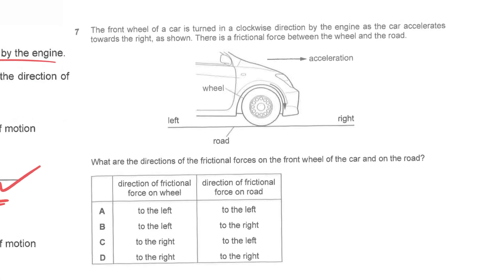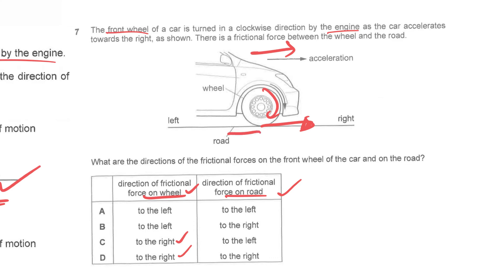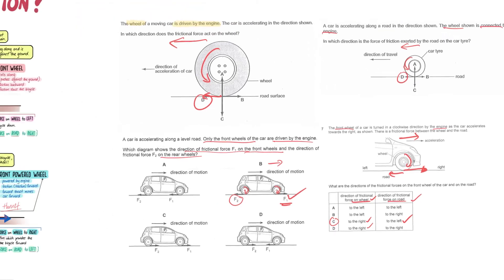For the last example, the question gives two choices: the direction of the frictional force on the wheel versus on the road. The car is moving to the right and the front wheel is connected to the engine, so it rotates clockwise, grips the floor, and moves the car forward — the friction on the wheel is to the right. By Newton's third law, action equals reaction, so the direction of friction on the road must be opposite — to the left. The answer is C.